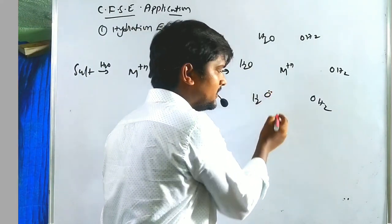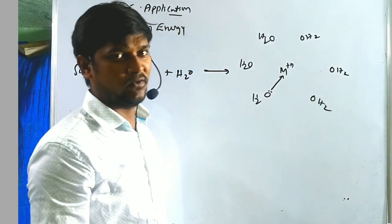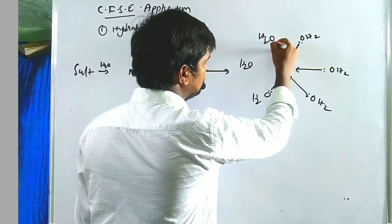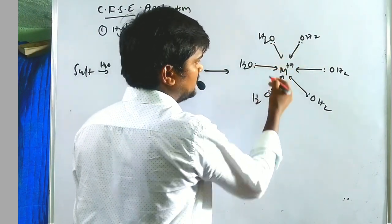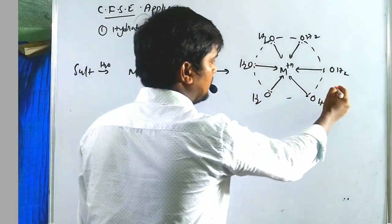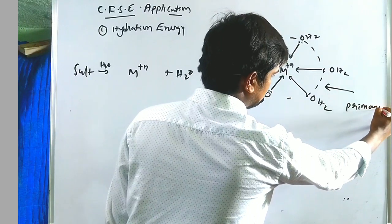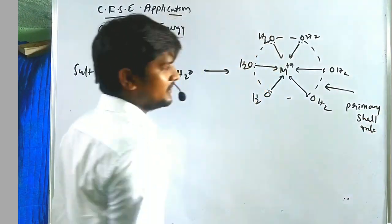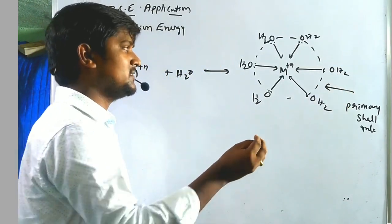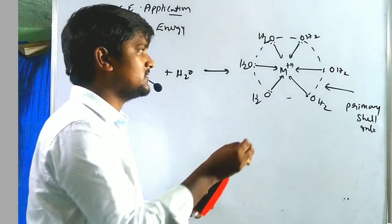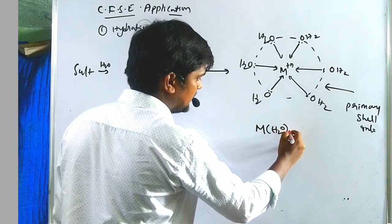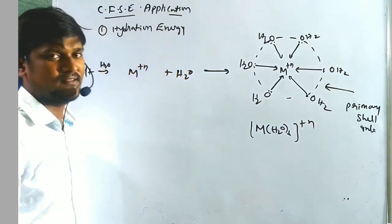The lone pair of electrons forms a coordinate covalent bond with the metal cation, forming a primary shell interaction. In the primary shell, six water molecules can coordinate with the metal cation, forming a hexa-coordinated complex with some metal positive charge.